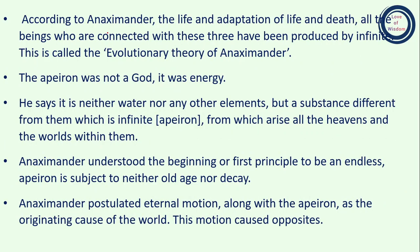According to Anaximander, life and the adaptation of life and death — all beings who are connected with these three — have been produced by the infinite. This is called the evolutionary theory of Anaximander. What we are reading about Apeiron — its qualities and how he represented the universe — that is referred to as his evolutionary theory.